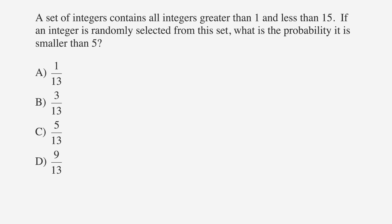A set of integers contains all integers greater than 1 and less than 15. If an integer is randomly selected from this set, what is the probability it is smaller than 5? Ready, set, pause.